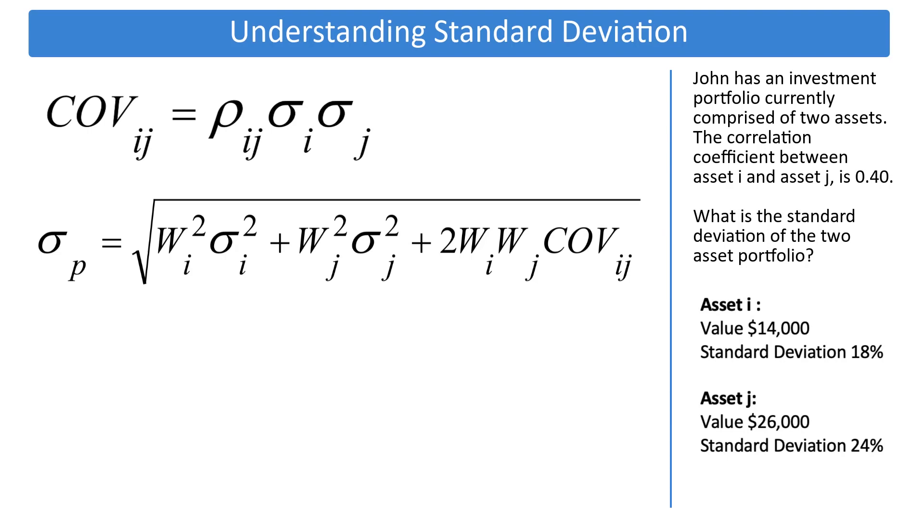John has an investment portfolio currently comprised of two assets. The correlation coefficient between asset I and asset J is 0.40. What is the standard deviation of the two-asset portfolio?